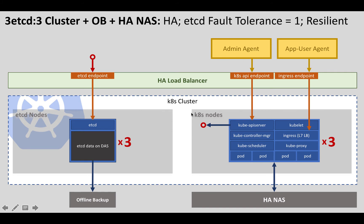Here is a 3 etcd by 3 cluster plus the offline backup plus the HA network attached storage. It is HA because you have more than one etcd node and more than one Kubernetes node. If one of them dies, your service to your users continues. etcd fault tolerance is one, and that's because of the design of etcd, which implements the RAFT protocol. If you want to have a tolerance of one, you need to have three nodes. Go ahead and research etcd and RAFT — that's the way etcd solves that problem.